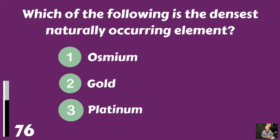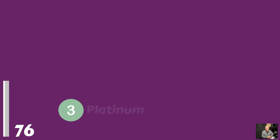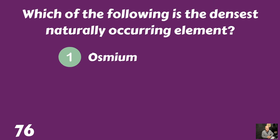Which of the following is the densest naturally occurring element? Osmium, gold, or platinum? That would be osmium.